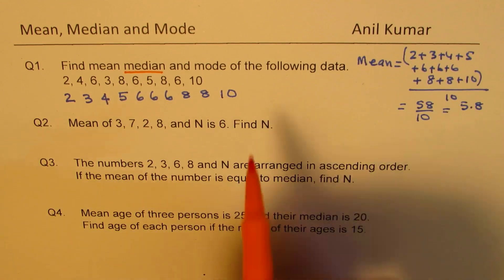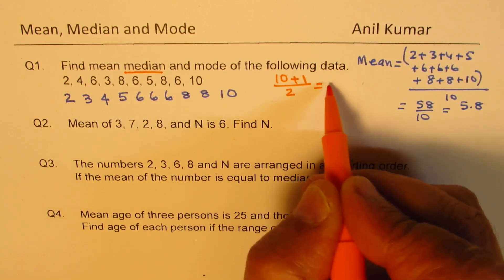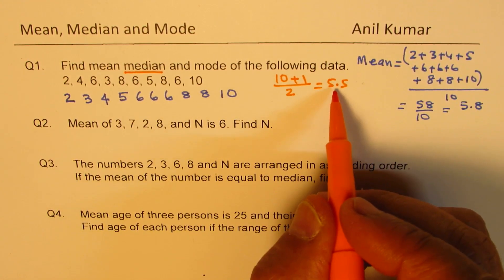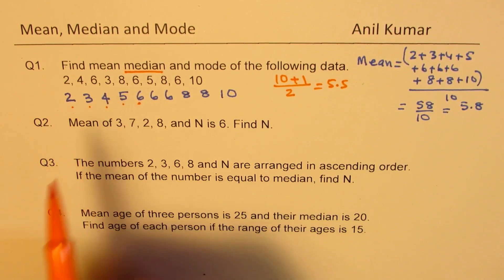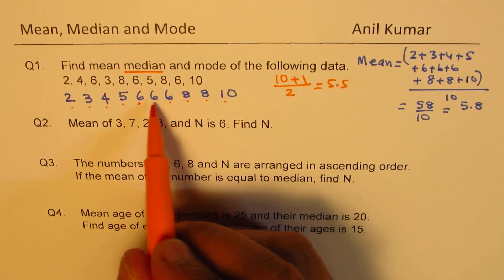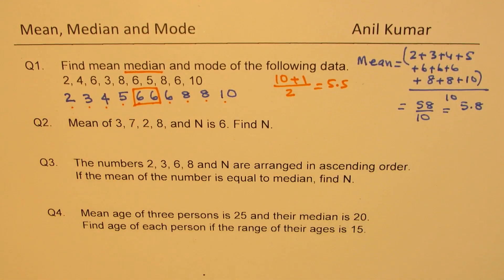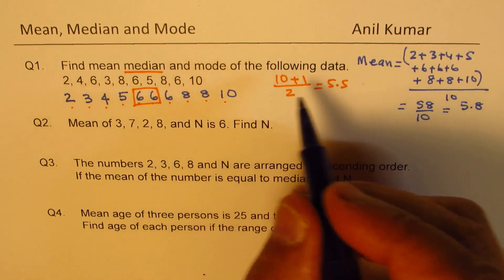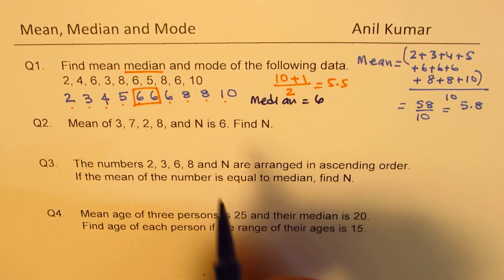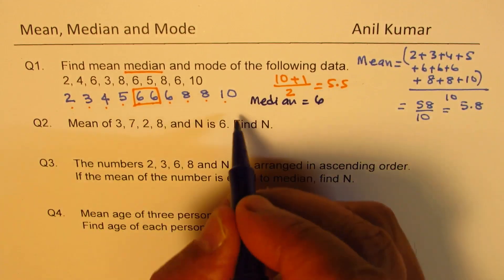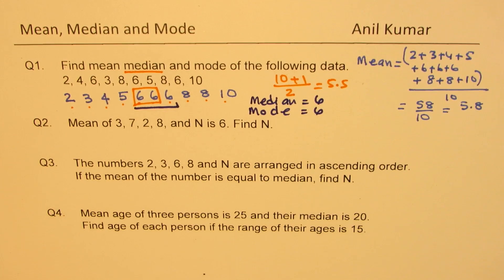Now median is the middle value. Since we have ten numbers, we add 1 to 10 and divide by 2, which gives 5.5 — so the median is between the 5th and 6th values. Both of those are six, so the median is six. Mode is the most frequent value — mode is also six, since there are three sixes. So mode is also six.